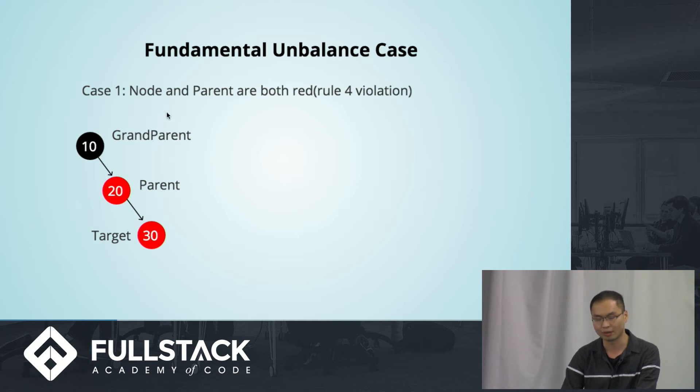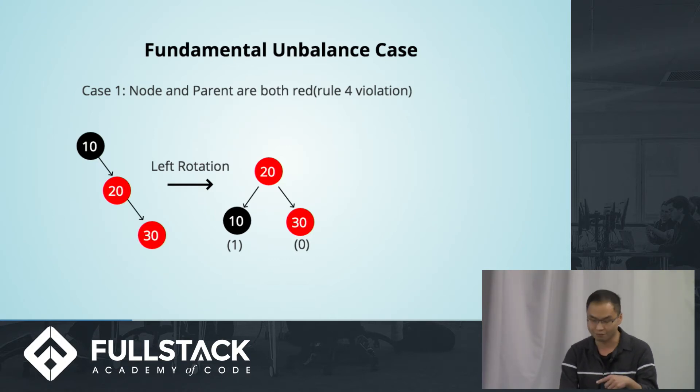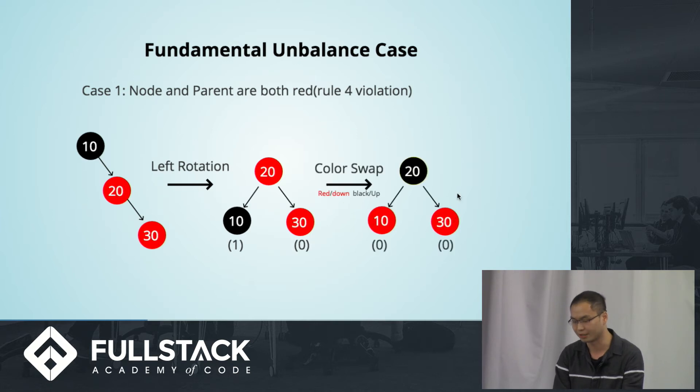Here's case 1. Case 1 is node and parent are both red, which is rule 4 violation. How do you validate? How do you solve this problem and change this to be a valid red-black tree? Very simple. Do a left rotation and swap the colors. That's one really simple operation.